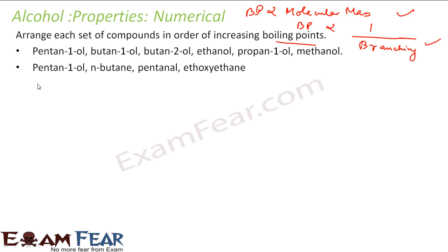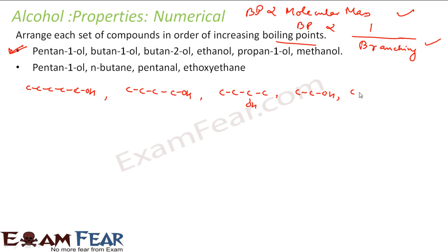Let me draw the structures. Pentane-1-ol has a 5-carbon chain with OH at position 1. Butane-1-ol has 4 carbons with OH at position 1. Butane-2-ol has 4 carbons with OH at position 2. Then we have propanol, ethanol, and methanol. Pentane-1-ol has the maximum molecular mass, so it has the highest boiling point — position 1. Among the butane alcohols, butane-1-ol has no branching and butane-2-ol has branching, so butane-1-ol is second and butane-2-ol is third.